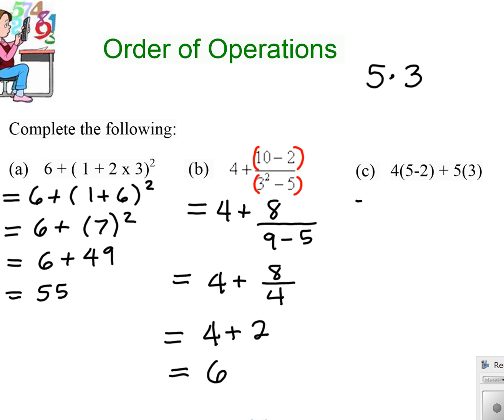And then finally, this last one again looks a little weird because there's no multiplication signs. There's brackets. So we're going to start by doing what's inside the bracket first. So 5 minus 2 is 3. Then we're going to do our multiplication. And we can actually do both of the multiplications at the same time. So 4 bracket 3 just means 4 times 3, which is 12. And 5 bracket 3 just means 5 times 3, which is 15. And then we're going to add them.